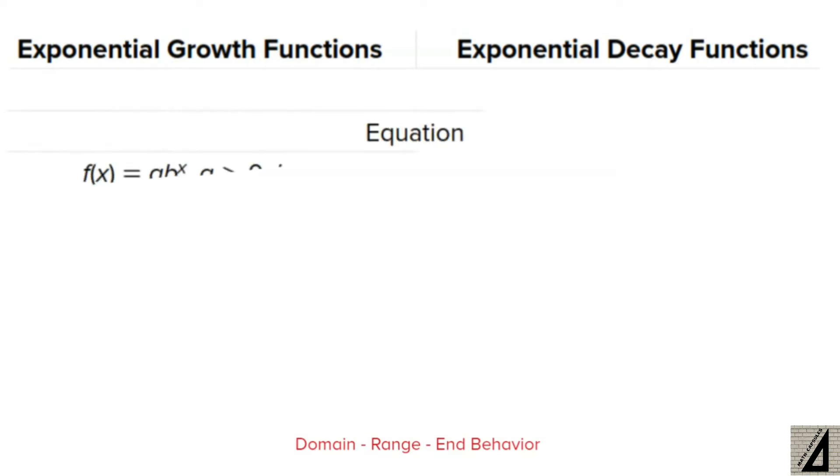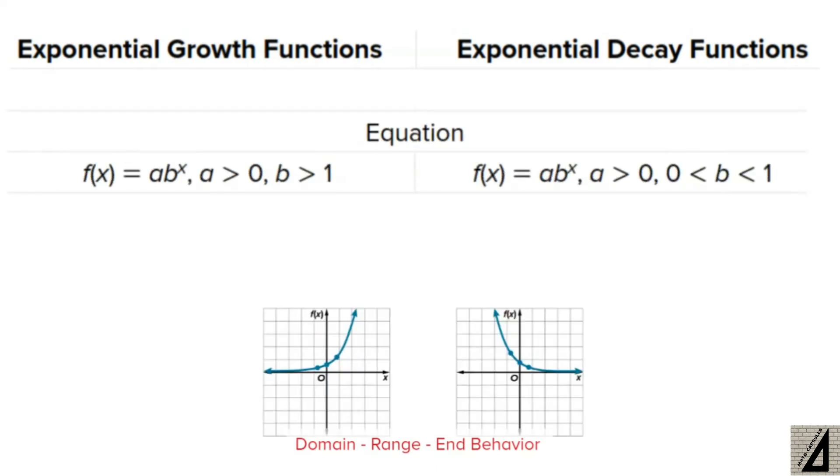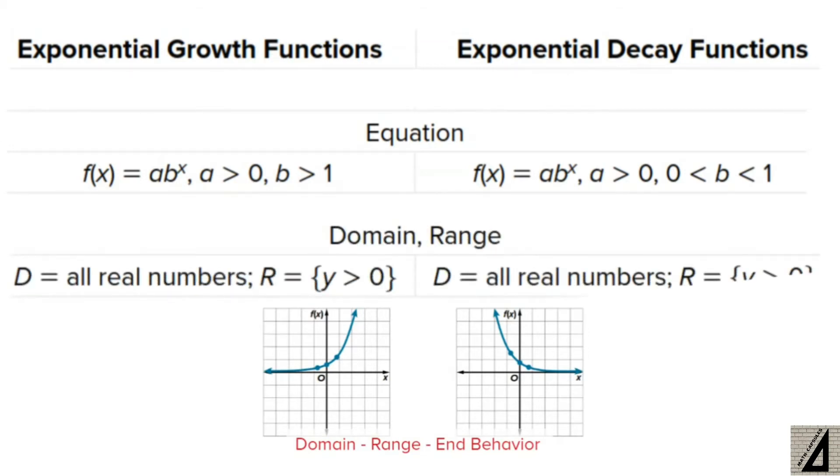To find the domain, range, and end behavior of the exponential growth and decay functions, the first thing is the equation for each of them. Second is the domain and range. The domain for both of them is all the real numbers, and the range is all y greater than 0, or positive y.